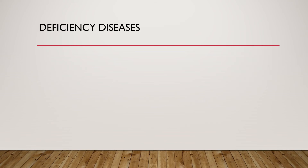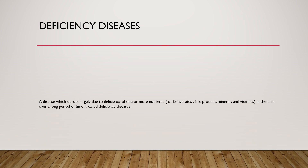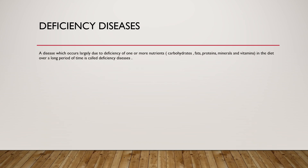The next topic is deficiency diseases. A disease which occurs largely due to deficiency of one or more nutrients — such as carbohydrates, fats, proteins, minerals, and vitamins — in the diet over a long period of time is called a deficiency disease.